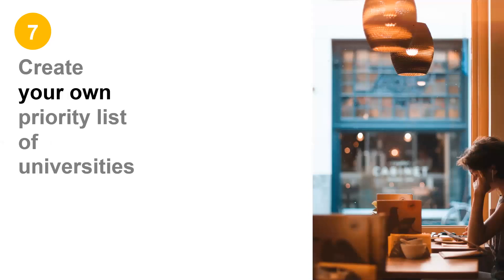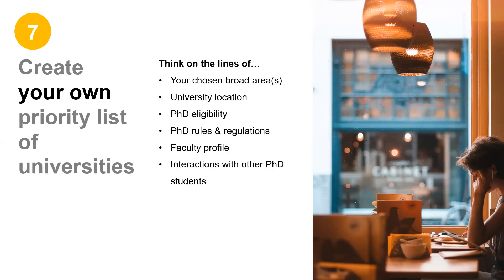Point number seven. Create your own priority list based on all the above points, like your chosen broad areas, university location, PhD eligibility, rules and regulations, faculty profiles, interactions with other PhD students, and most importantly, your basic instinct.